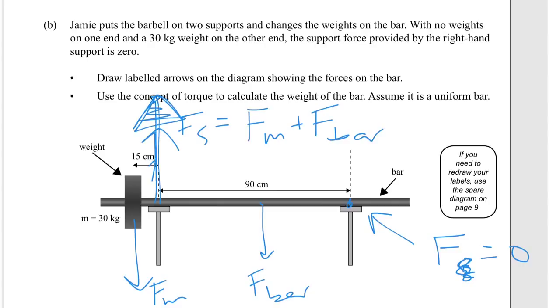Use the concept of torque to calculate the weight of the bar, assuming it is a uniform bar. The easiest thing to do is to take a pivot point right at the centre here so that support force is eliminated from our equation.